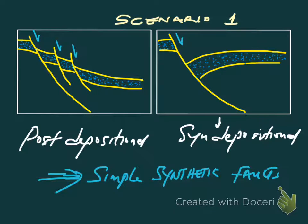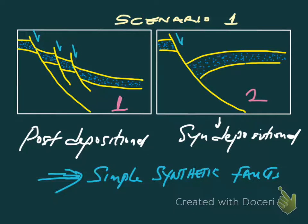Consider a scenario where we have simple normal faulting in both figures one and two. What's common to both is that we have simple synthetic faults. But one thing that is different is that figure one shows post-depositional faulting, while figure two shows syn-depositional faulting. That also tells us a lot about when the faulting happened — whether it happened before or during sedimentation.